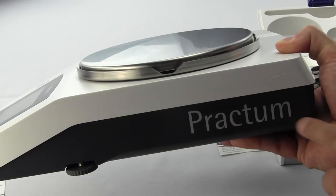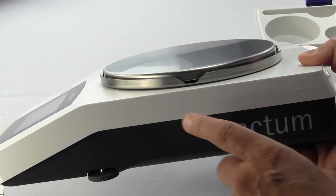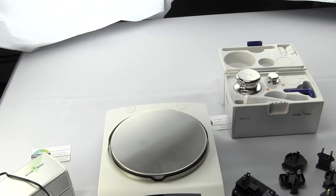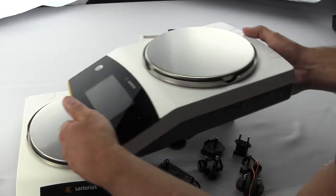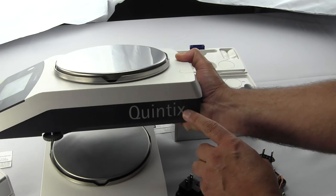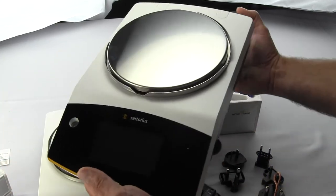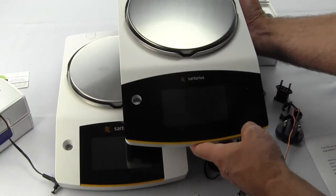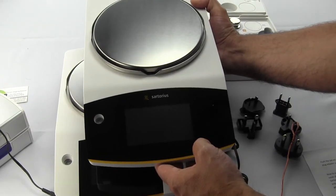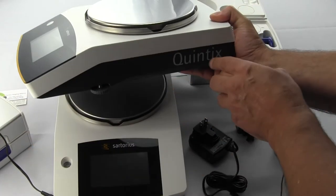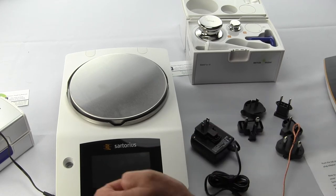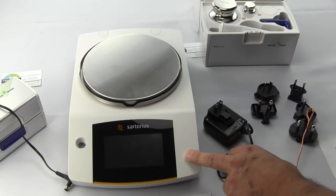On the other side you can see Sartorius has done a great job branding their products—this is the Practum. On the Practum series these are all external calibration. Just to show you the difference, this is the Quintet. The Quintet has motorized internal calibration. They've changed the overlay just a little bit, but it's the same body and housing. The difference is the Quintet has motorized internal calibration versus the Practum which is external calibration only.